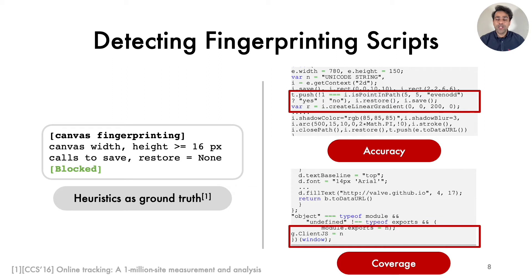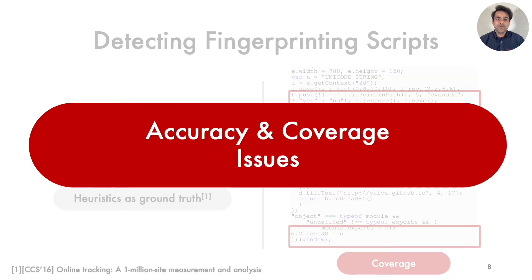Secondly, these heuristics only work on execution traces, so they cannot detect scripts which require some external events or user or browser actions to execute. In this example, the fingerprinting methods are assigned to a window object and can be called later, which is why the heuristics will fail to detect the script. So broadly, we can conclude that these heuristics have accuracy and coverage issues.